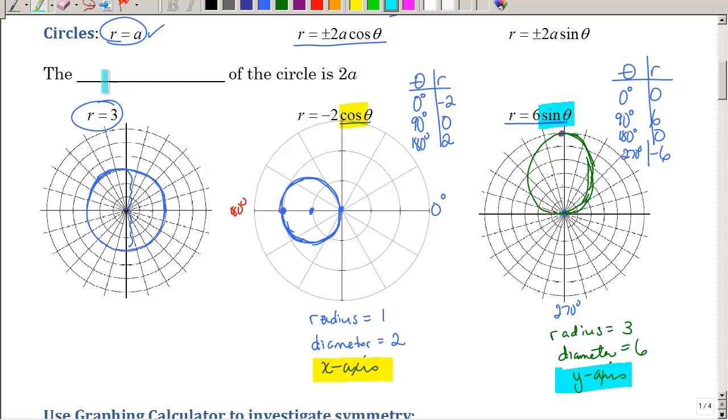So if we're going to come back up here and answer that question, the blank of the circle is 2a. So looking at these formulas, 2a corresponded with two. 2a corresponded with six. So what did that number equal to, the radius or the diameter? It's the diameter. So the diameter of the circle is that coefficient of sine or cosine.